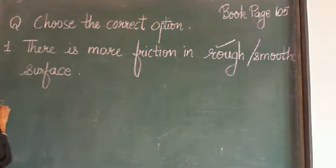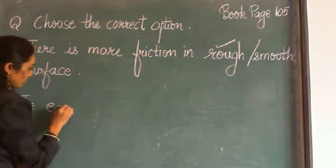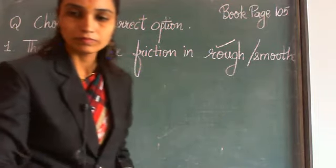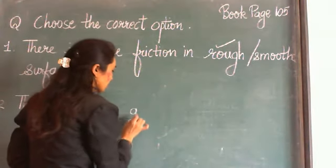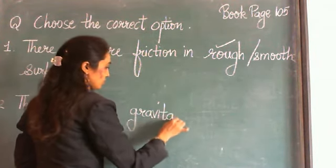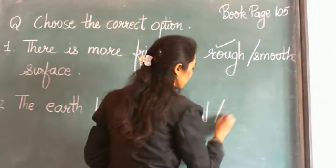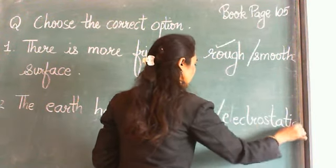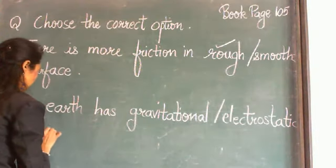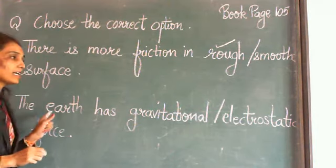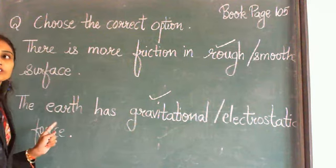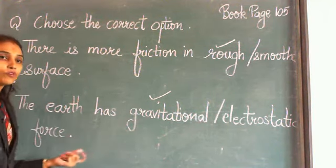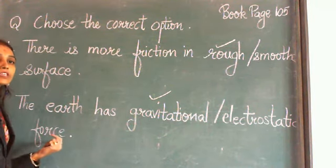Second question: the earth has gravitational force, oblate, or electrostatic force? The earth has gravitational force because the earth attracts objects towards itself due to gravitational force. So the correct answer is gravitational.